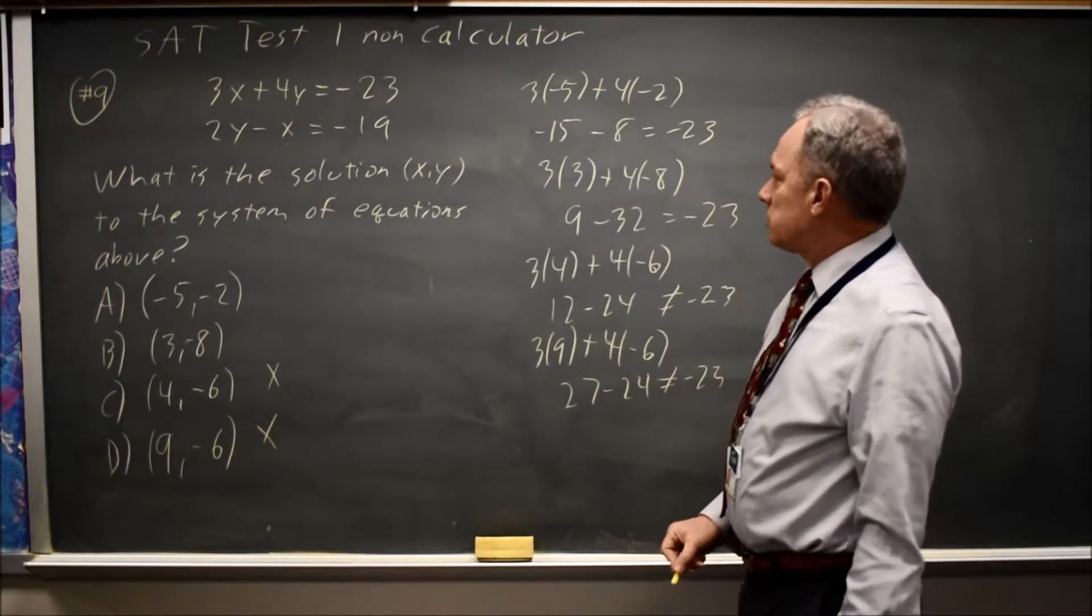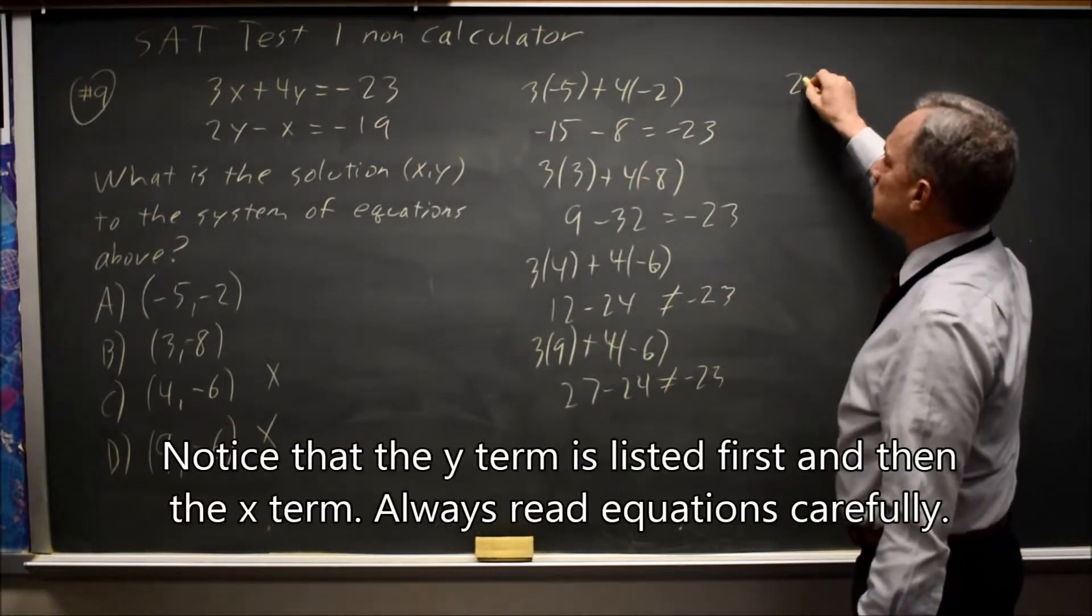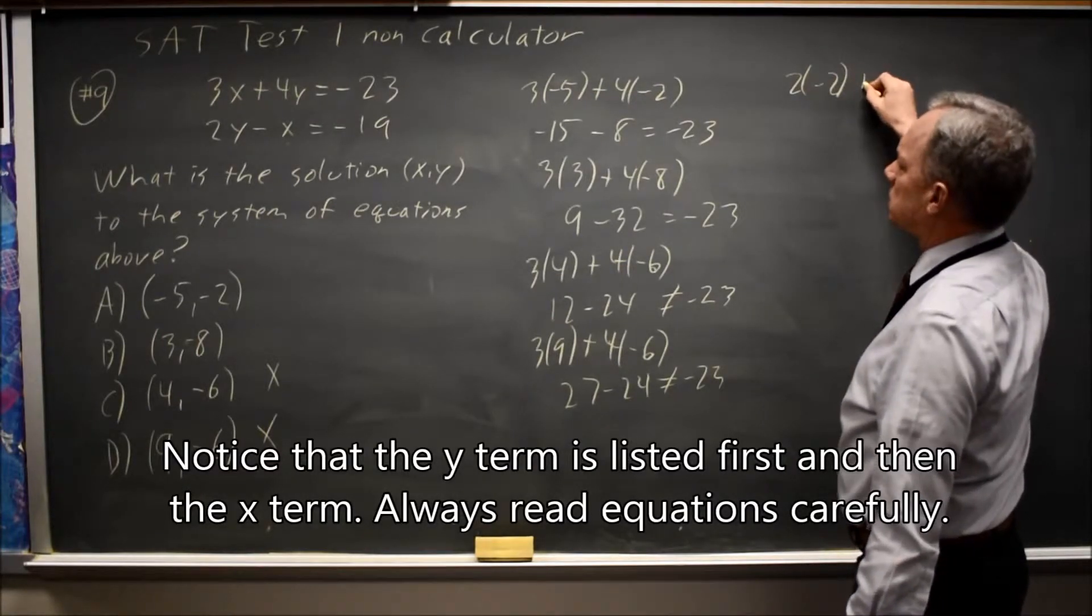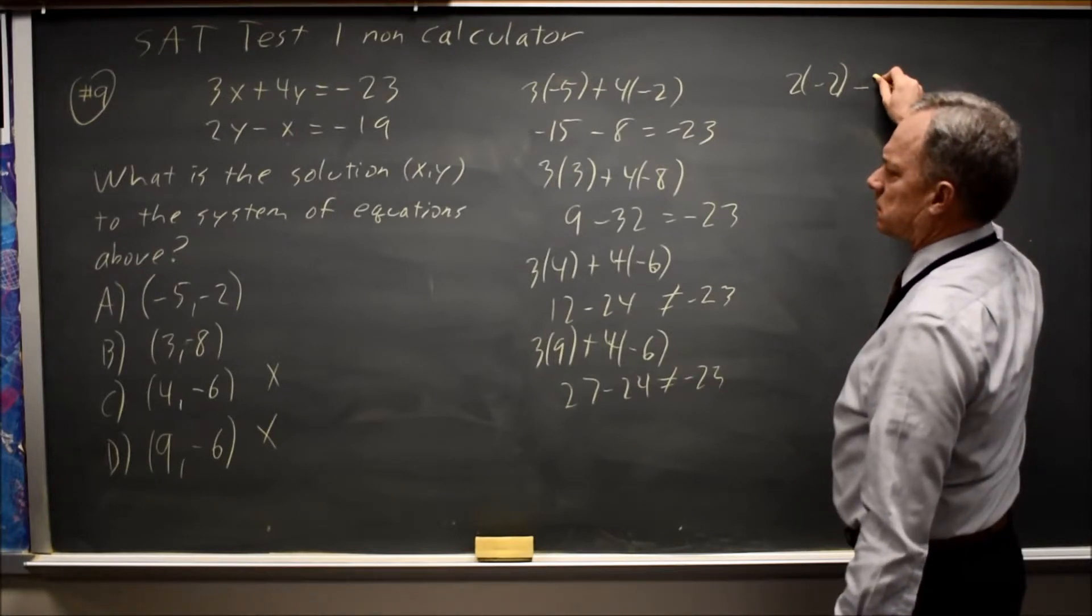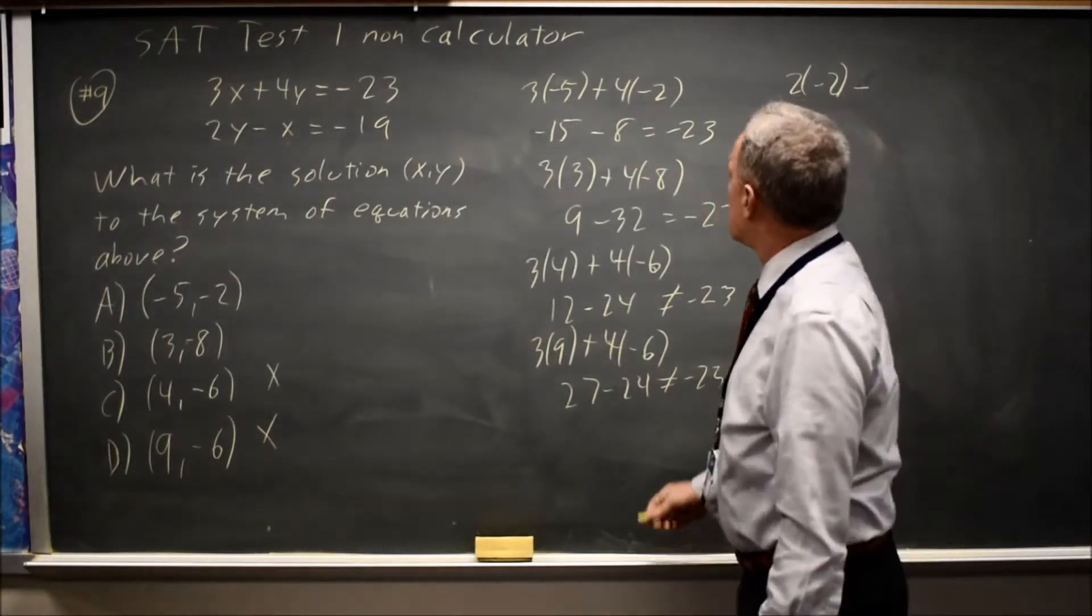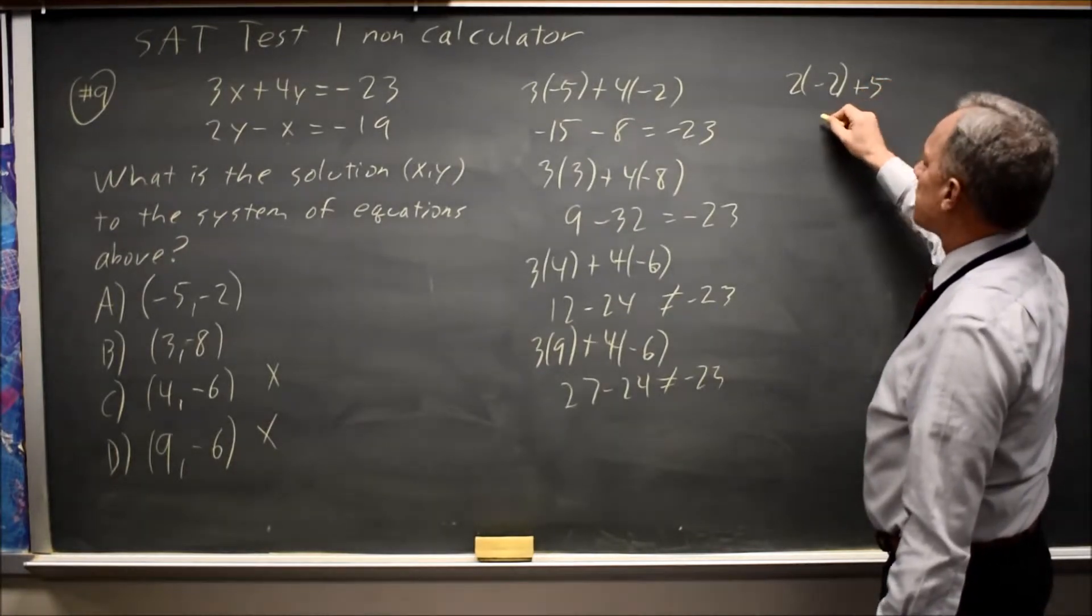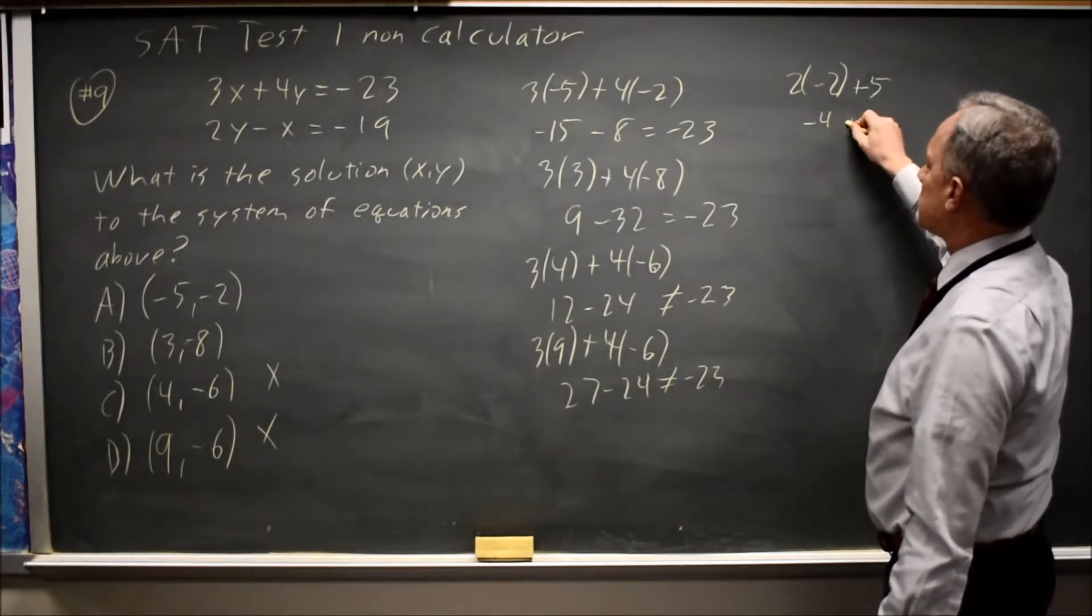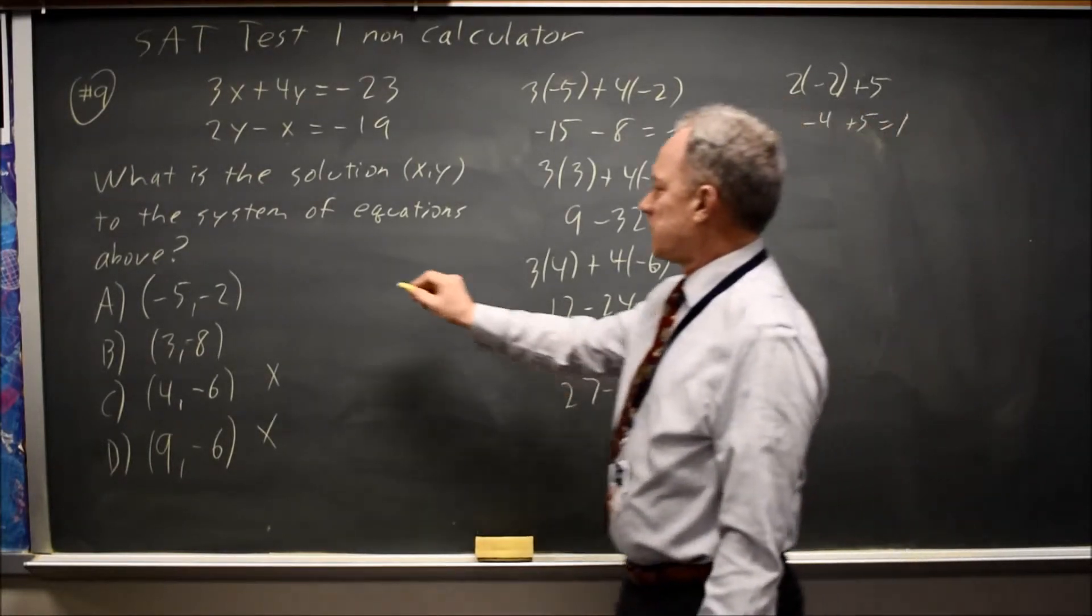Now I'm going to go to the second equation with choice A. Twice y is twice negative 2 minus x is minus negative 5 is plus 5. That is negative 4 plus 5 equals 1. That doesn't sound right.